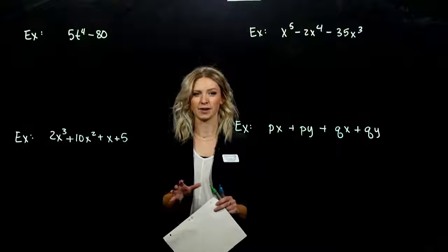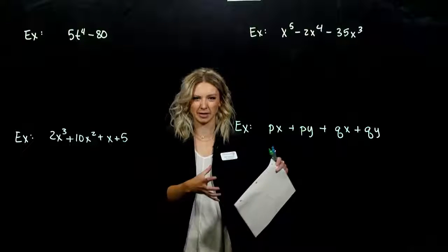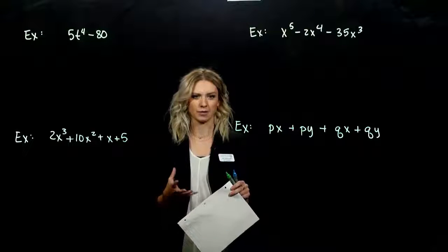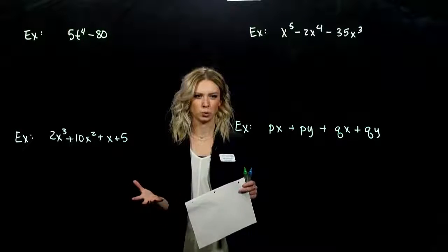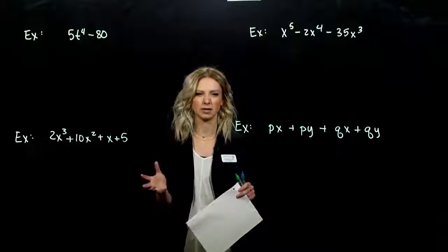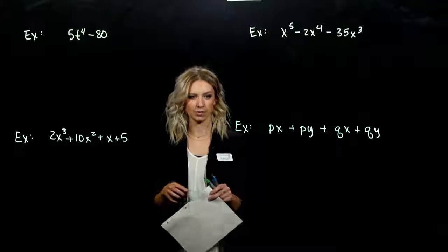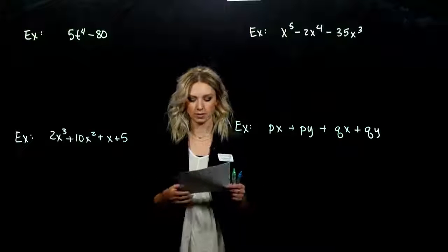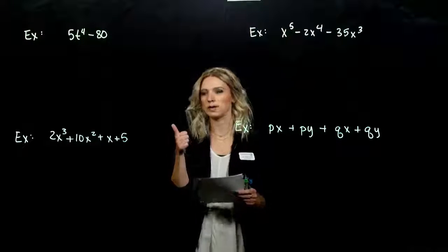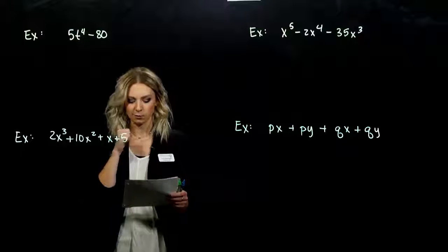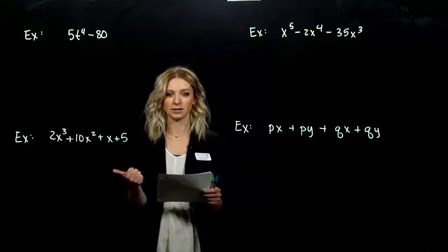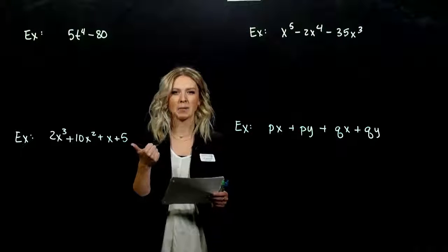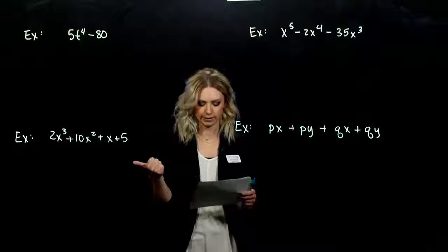We've seen all of the different cases for factoring, but we've seen them in their respective chunks. Now if we start mixing these different types of factoring problems, how do we know what to do when? Section 5.6 is a summary and combination of all the sections we've talked about before. How do we factor in general? The first thing should always be to look and see if we can factor out a greatest common factor, or GCF — anything that all of the terms share in common, to make life easier on ourselves.